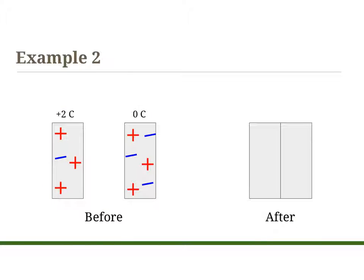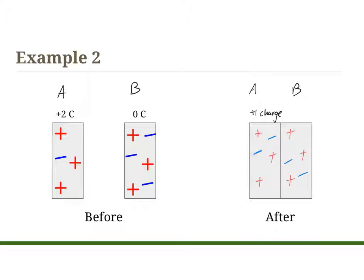In example two, object A has a positive two charge — three positive things and one negative thing. Object B has a zero charge — three positive things and three negative things. When they're stuck together, conduction occurs. Positive charges don't move, but negative charges will move. Object A started with one negative charge and object B had three negative charges, so I move one more negative charge to object A and leave two with object B. Now each object has three positive things and two negative things, giving both a plus one charge.